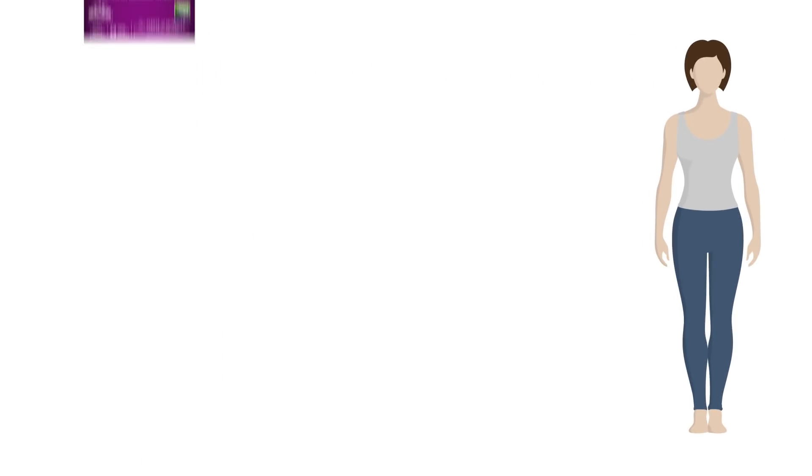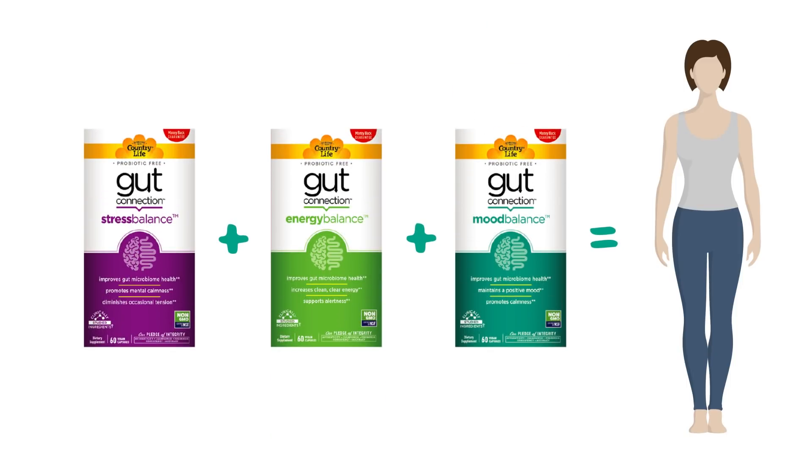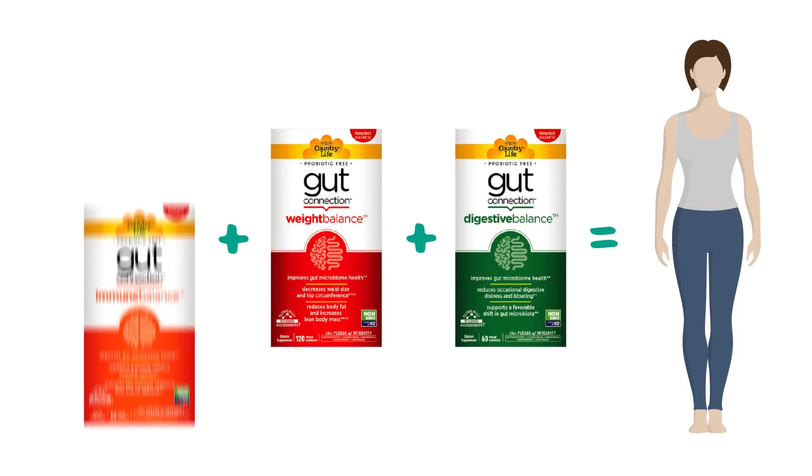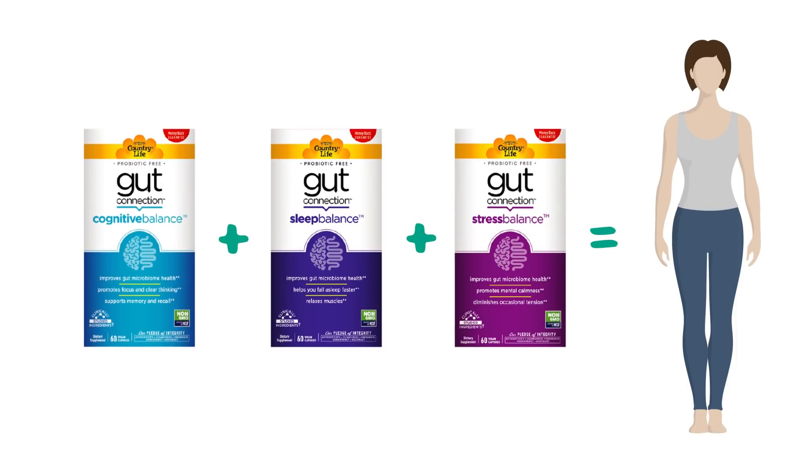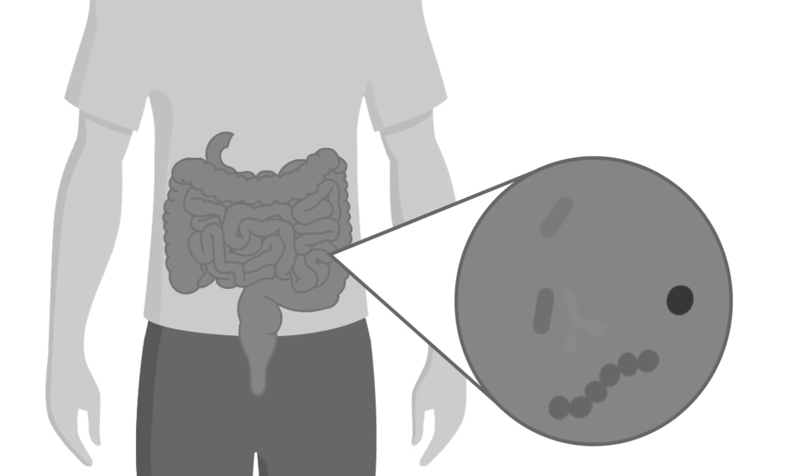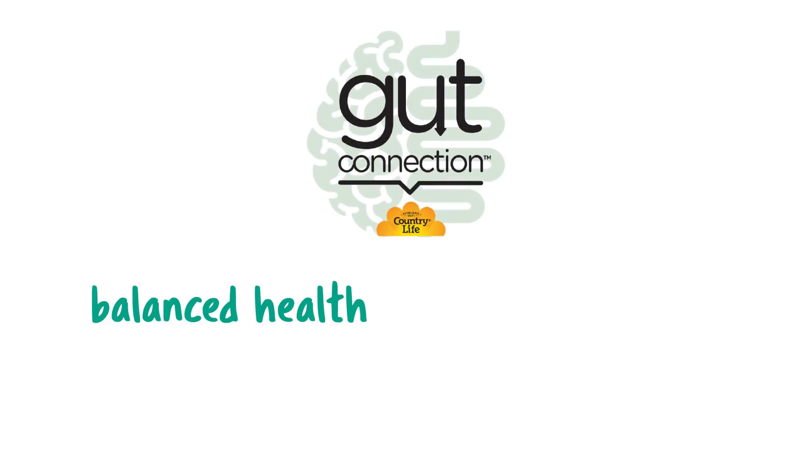Gut Connection is like a dynamic personal health equation. Add and remove the eight different formulas as your concerns prioritize and shift. Keep all eight on hand to adapt your equation to meet your ever-changing needs, because balanced health starts in your gut.